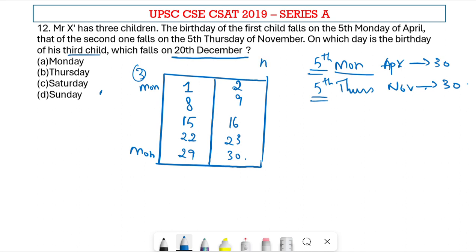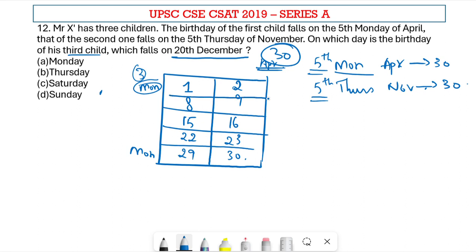This is not just applicable for April — for any month with 30 days, for any day to repeat for the 5th time, these are the only two possibilities. If we are dealing with a 31-day month, there is one more possibility: 3rd, 10th, 17th, 24th, and 31st. But we are not dealing with that right now.